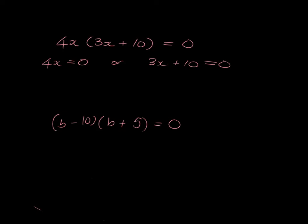If 4x is zero, this is the same as you've been doing all along, x is zero divided by four, which is just zero. Or 3x is equal to minus 10. And so x is going to be minus 10 over 3. So if this times this equals zero, then either x is zero or x is minus 10 over 3.